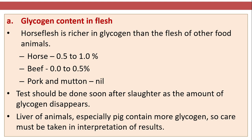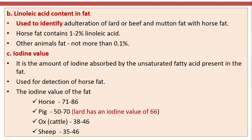Horse flesh contains 0.5 to 1 percent glycogen, beef 0 to 0.5 percent, and pork and mutton nil. The test should be done soon after slaughter as the amount of glycogen disappears over time. Note that the liver of animals, especially pigs, contains more glycogen, so care must be taken in interpreting results.